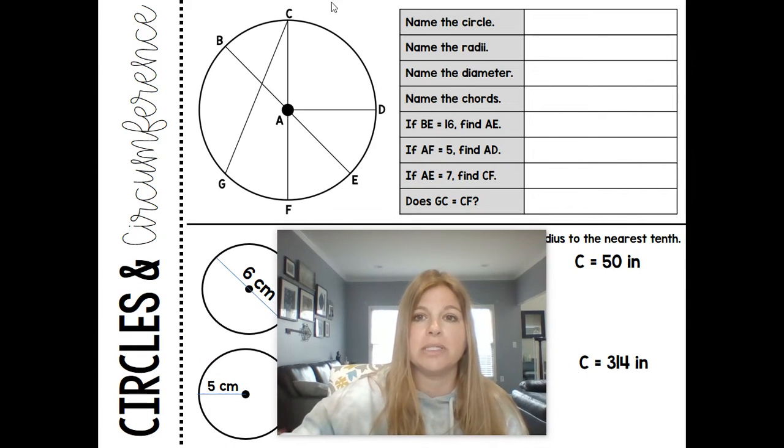So naming parts of a circle. Here, I have this diagram. I've got lots of things going on. The way we name a circle is by its center. So if I looked at this circle, I would simply name it Circle A, and this is the symbol for a circle. It's a circle with the little center marked in.